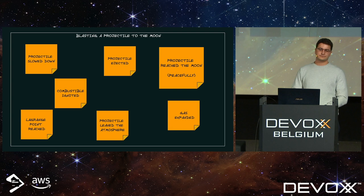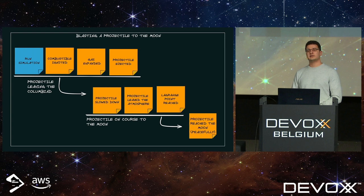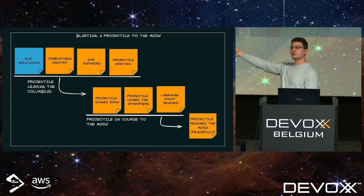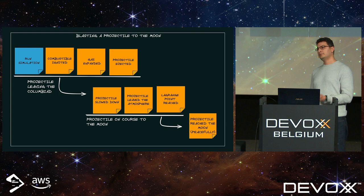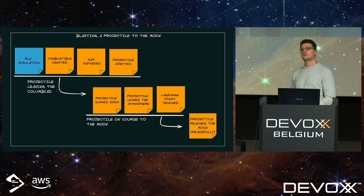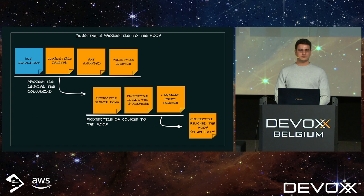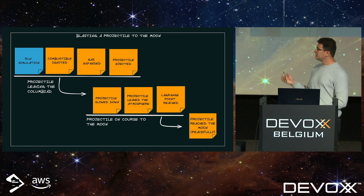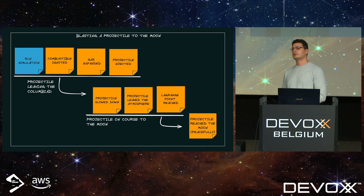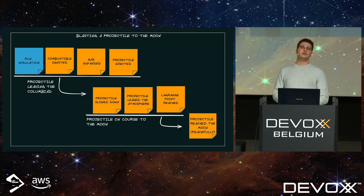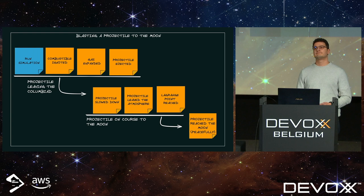We keep going with the workshop. We organize tickets chronologically and add comments — including 'run simulation,' a new type of sticky note. As we organize them chronologically, we start to realize there are clusters of tickets relating to different phases of the simulation: a moment where the projectile is leaving the columbiad, and events related to the projectile on course to the moon. We don't know yet what to do with this information — we've identified these two phases but we're not sure what to do with them — so we keep going back to implementation.